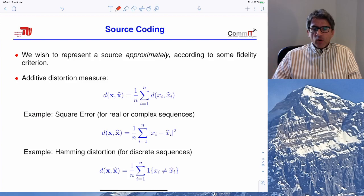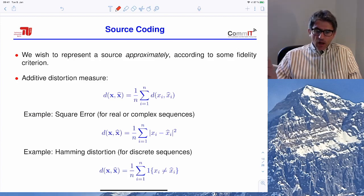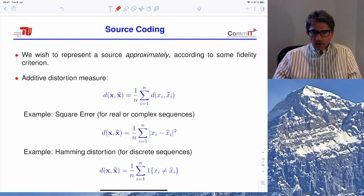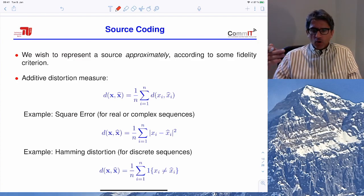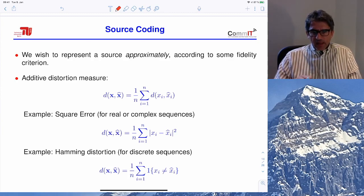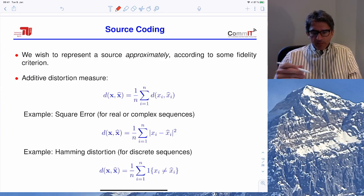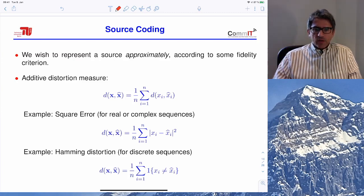When you compress, you have a trade-off between accuracy — or distortion — and bit rate. You all have direct experience of MP3 or MP4: the more a video is compressed, the lower the quality but the smaller the file size. The question is: what is the best trade-off between accuracy and rate?